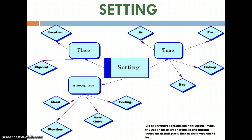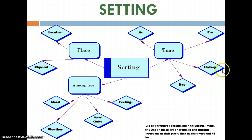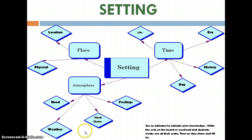Looking at the setting map, the setting can refer to the time in a person's life, an era like the 60s, general time, a time in history like World War II, or a time of day. Also related to setting is the physical place or location. The setting sets the atmosphere and mood. The author sets it up with word choice, which affects the tone and the feelings of the characters. Weather can also set up that atmosphere and feeling.